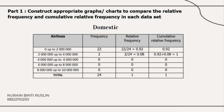Hello everyone, my name is Noren Binti Ruslin and my matrix number is BB22110250. Today I will present for part 1. As we can see here, this is the data that I get from the calculations.